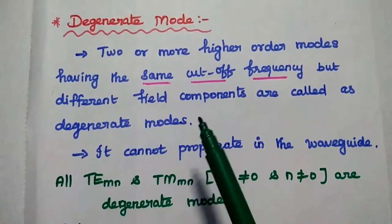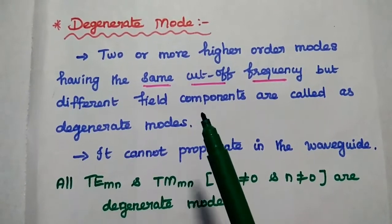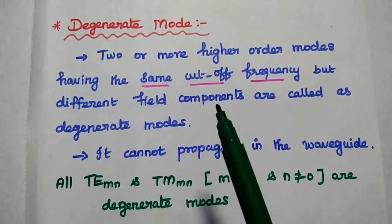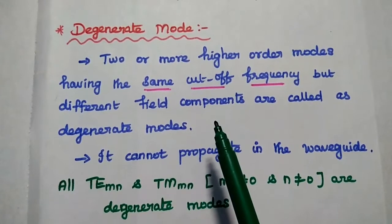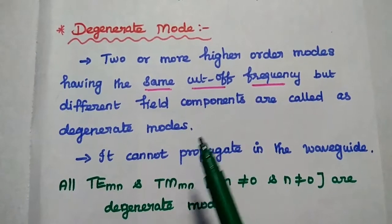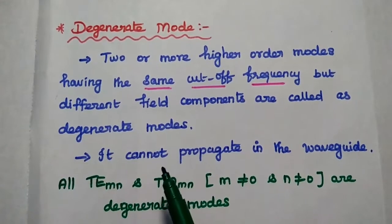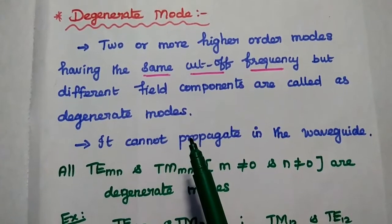Next one is degenerate mode. Some of the higher order modes having the same cutoff frequency but different field components are called degenerate modes. These are non-propagating modes.